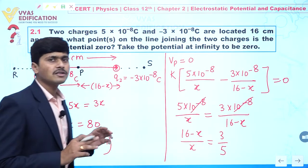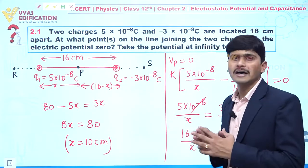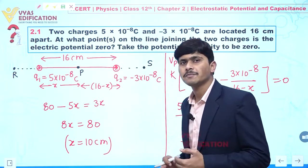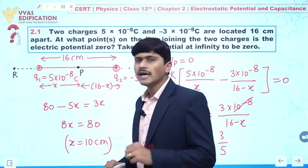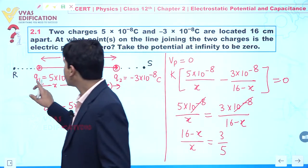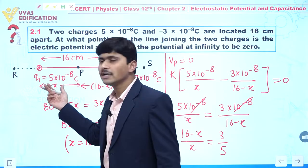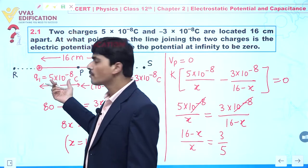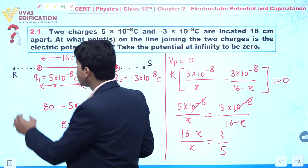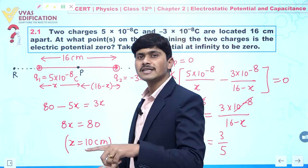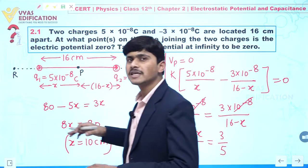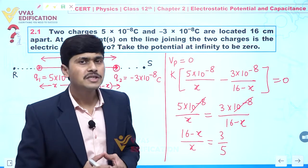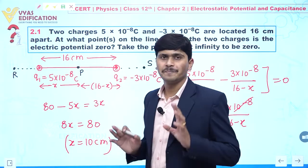Now concentrating on points R and S. At point R (to the left of Q1): in terms of magnitude, Q1 is greater than Q2, and the distance from Q1 is less. Both factors increase the potential at point R due to Q1, so we will not find electric potential zero to the left of Q1.